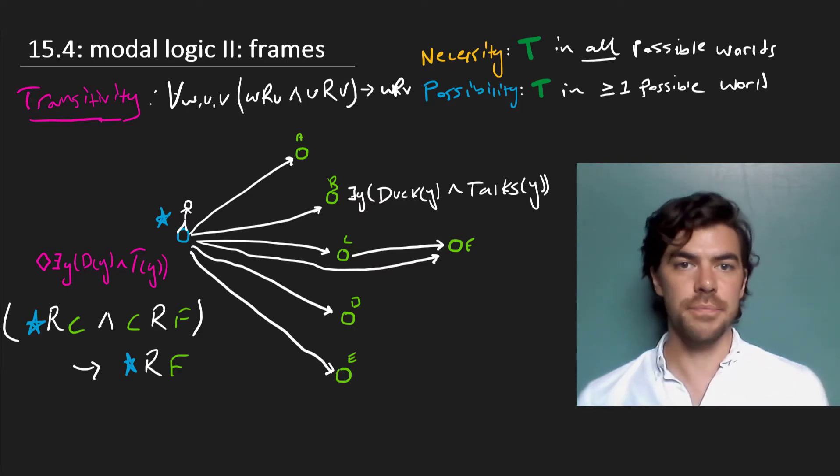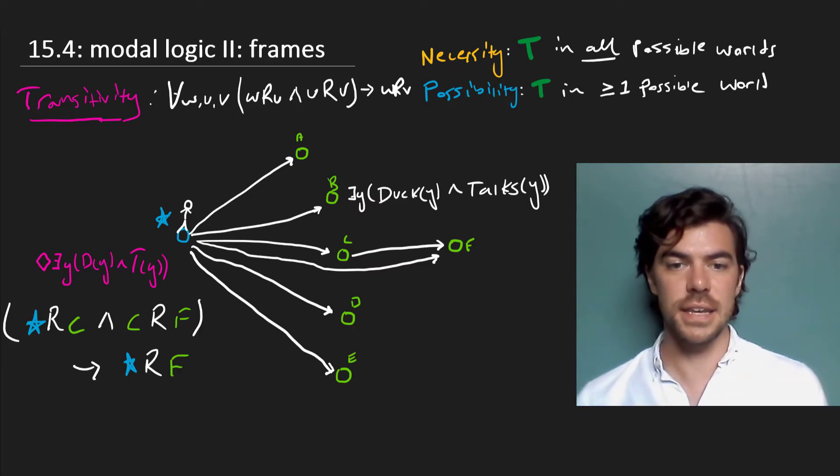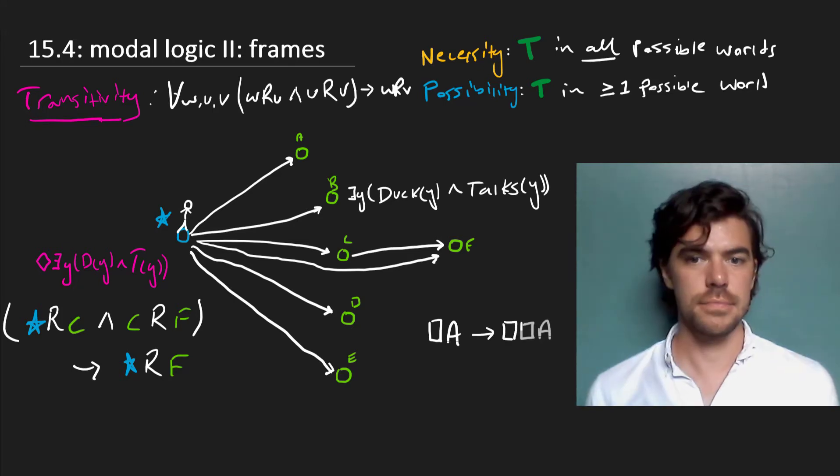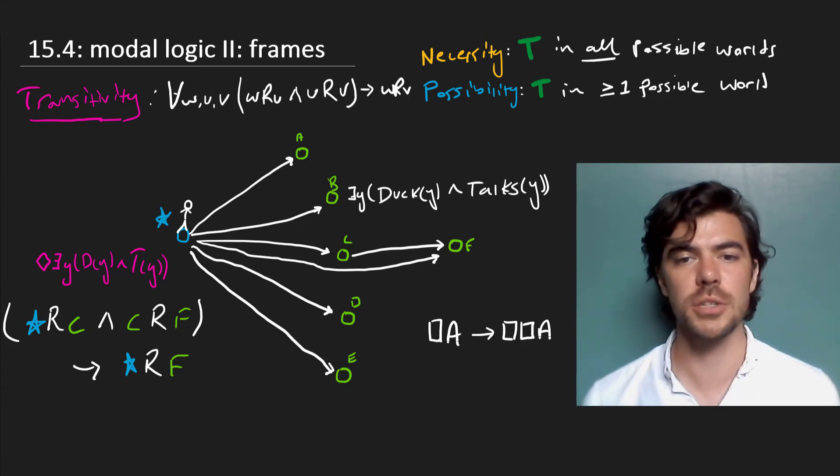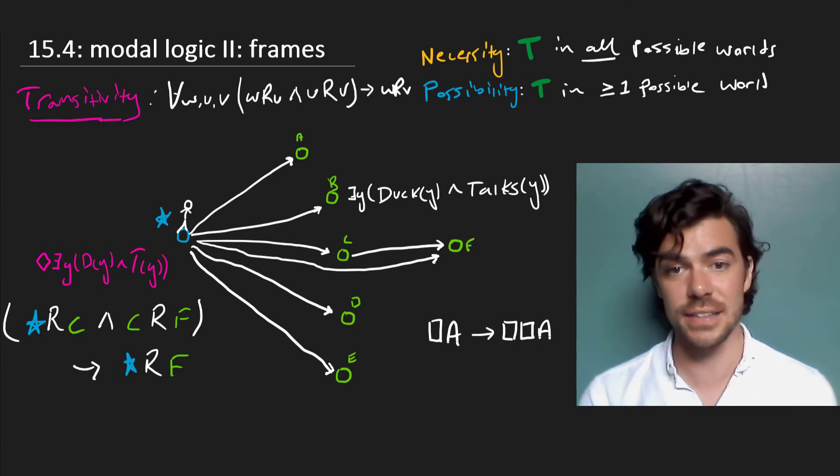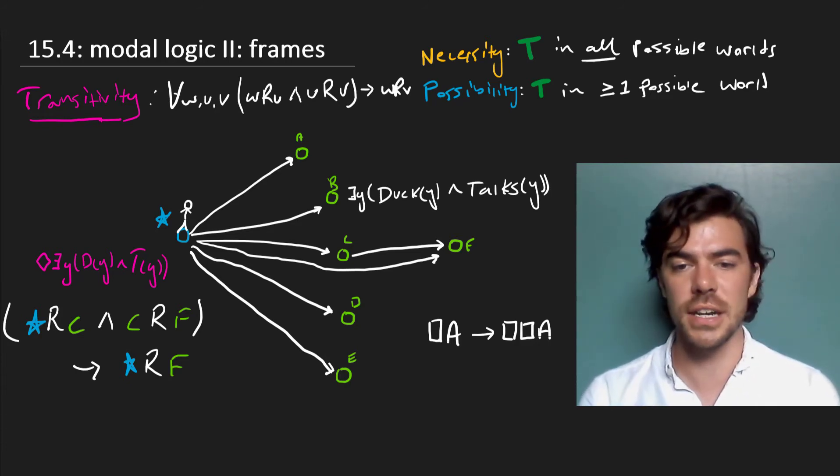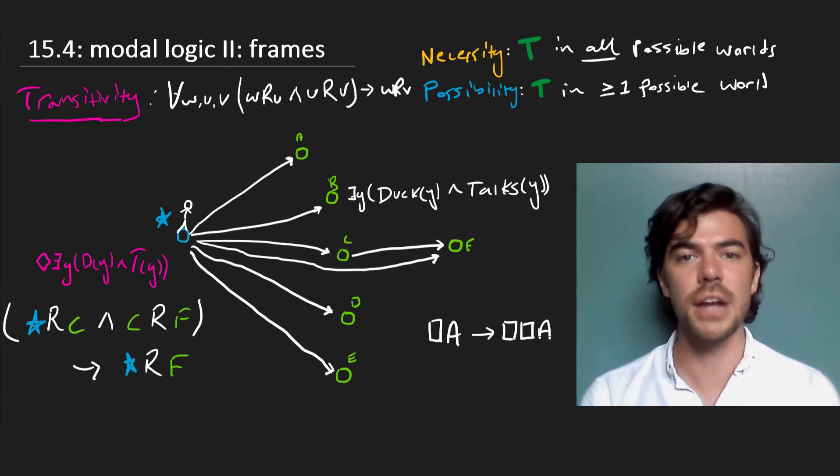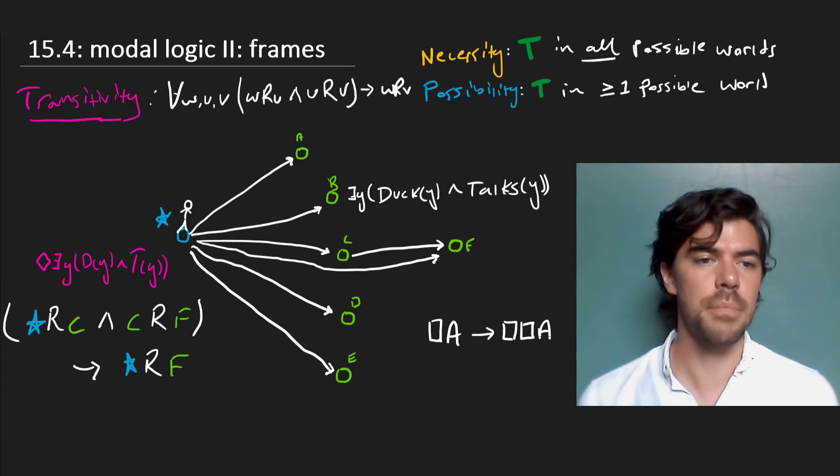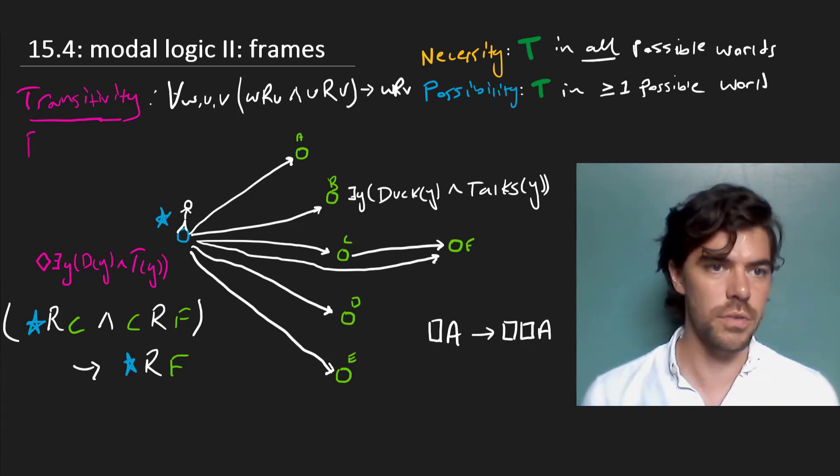Why does this matter? Well, if we define necessity as true in all possible worlds, then this gets us that necessarily A gives us that necessarily necessarily A. So if it's true in all possible worlds that we can access, it's true in all possible worlds that the worlds we can access can access. You might have doubts about whether necessarily A entailing necessarily necessarily A really says all that much.